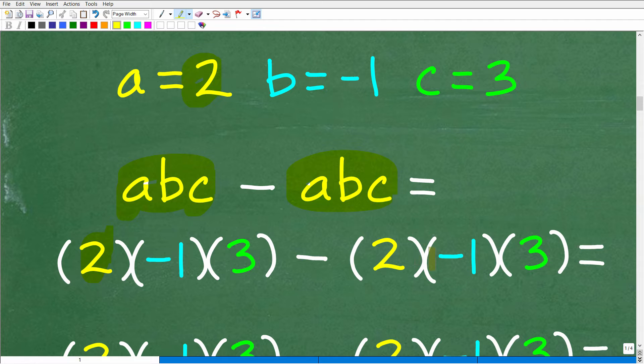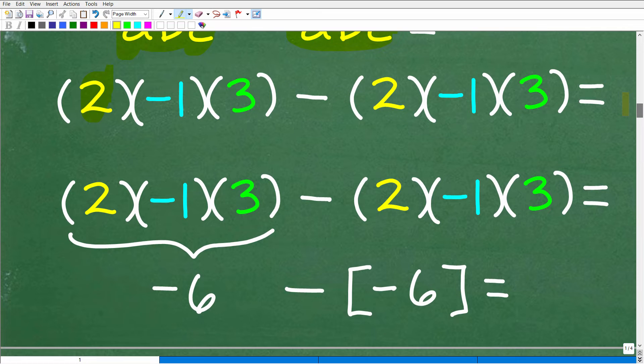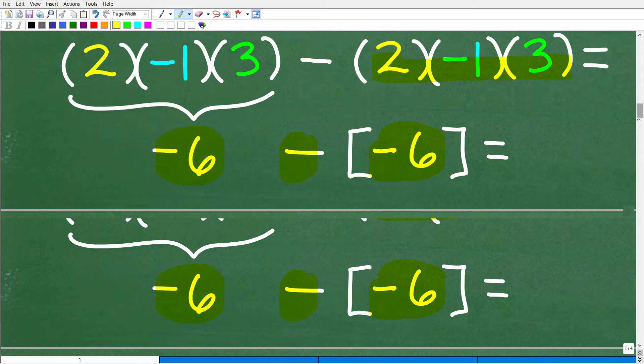And, of course, we're subtracting one from the other, right? Okay, so let's go ahead and just do this work. So 2 times negative 1 times 3 is what? Well, this is going to be 6 times a positive 6 times negative 1, which, of course, will be negative 6. So we have negative 6. This is also negative 6. So we're going to have negative 6 minus a negative 6. So what is that equal to?